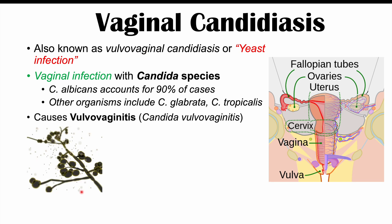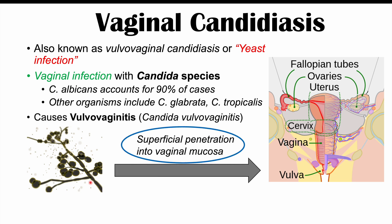Candida can be a part of the normal flora on people's skin — part of the normal microbial population — and not cause infection. But in some individuals it can cause an infection, due to certain disruptions in the immune system, in epithelial barriers, or in the environment of the vagina, allowing candida species to penetrate superficially into the vaginal mucosa.